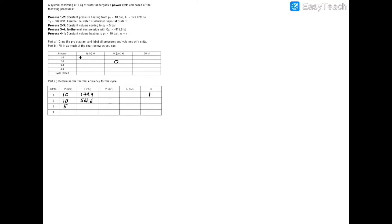In process 3 to 4 we have isothermal compression, so T3 equals T4 — we don't have those values yet but we'll find them later. We are told the heat transfer is negative 815.8 kilojoules for process 3 to 4. The negative sign means heat is leaving the system.